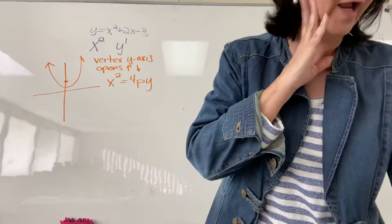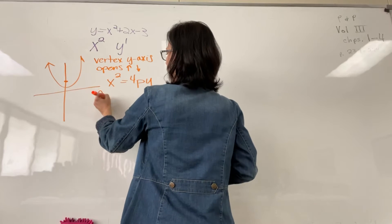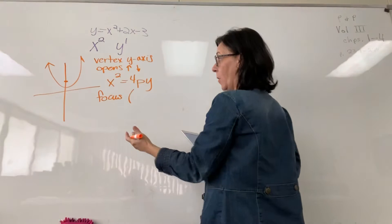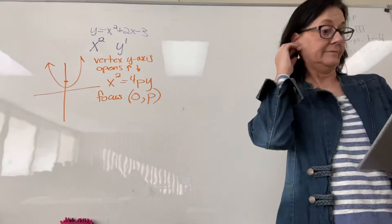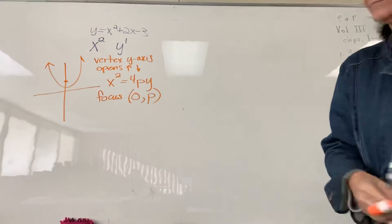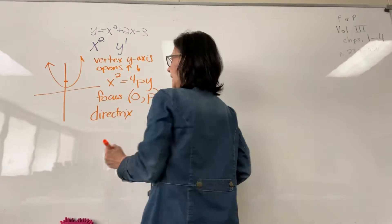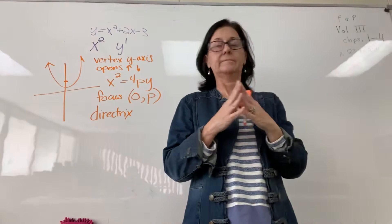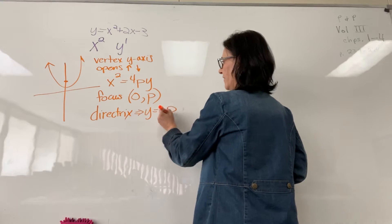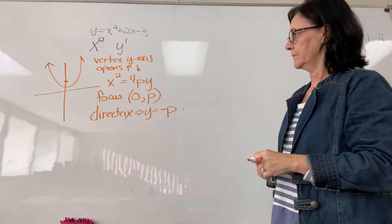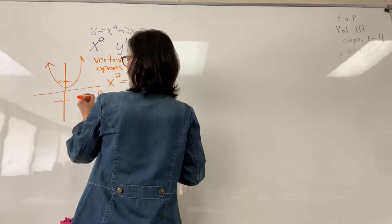So p determines our focus point. In this case, because our focus point is going to be on the y-axis, the focus coordinate — x — will be zero, and the y-value will be the value of p. We're also going to have what's called a directrix. It's almost like an asymptote. The directrix is going to be at y equals the opposite of p. Let's just say that value is 2.